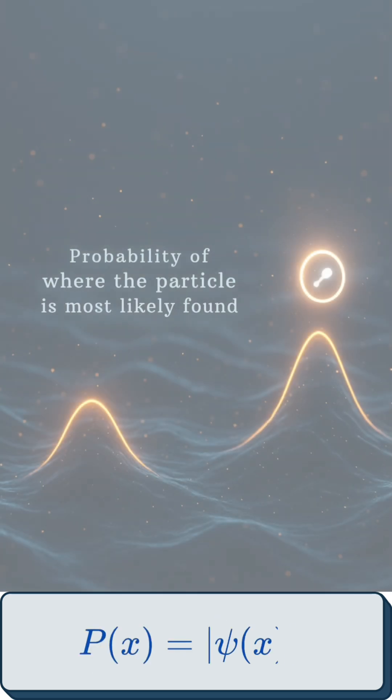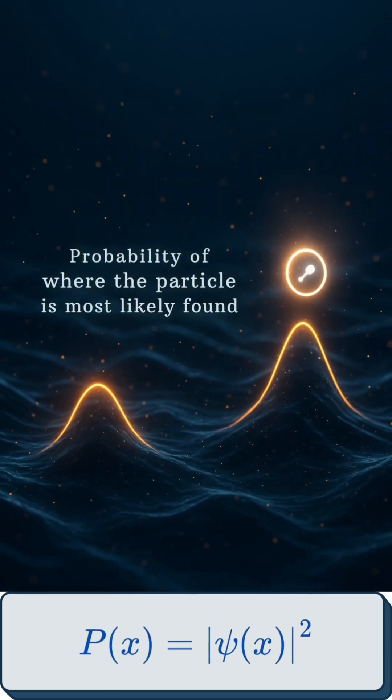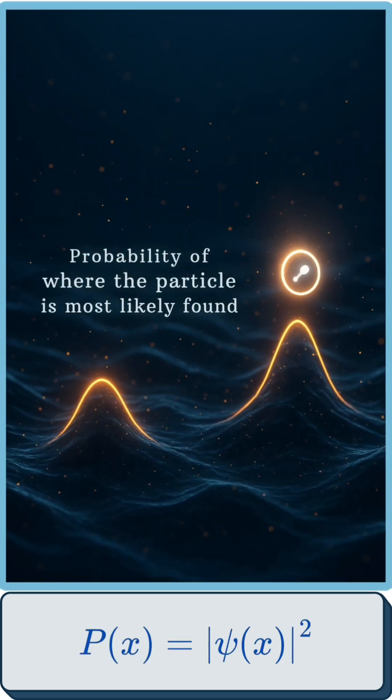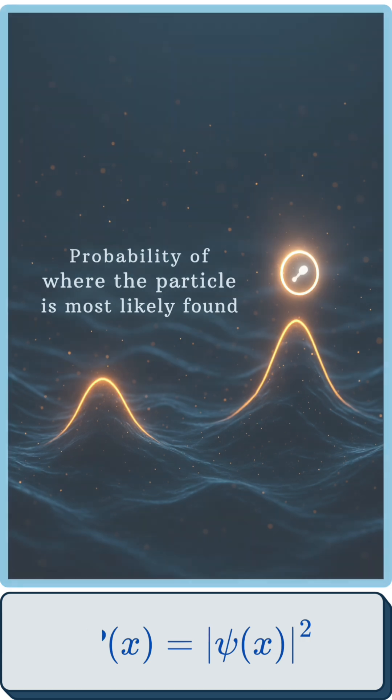But how do we find the particle? The wave function itself isn't a particle — it gives us probabilities, the likelihood of finding the particle at a certain spot. The wave peaks are highest where we are most likely to locate the particle.